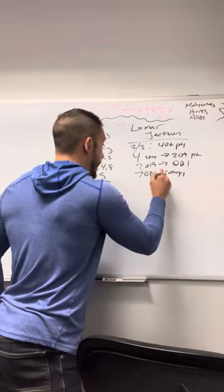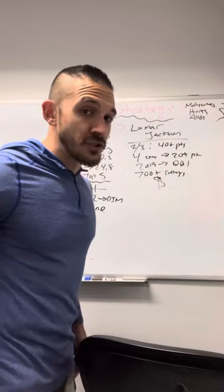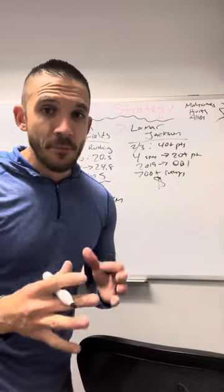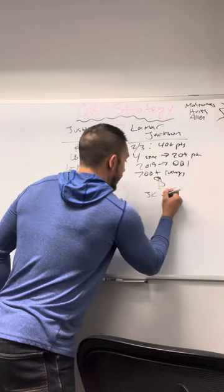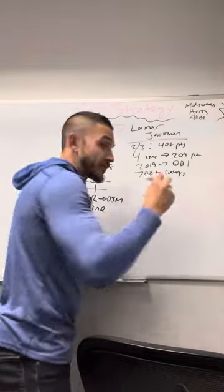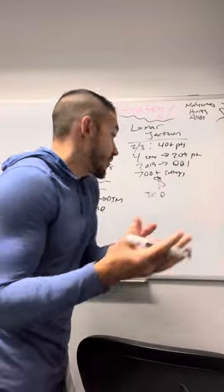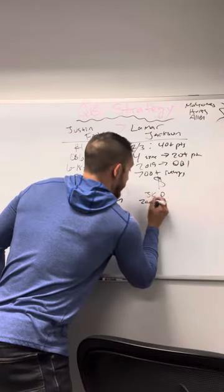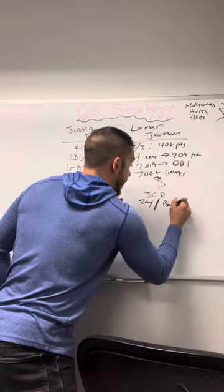This offseason, he got paid to be back in Baltimore. He has the best weapons of his career. J.K. Dobbins is now healthy and further removed from that injury. You have two former first-round wide receivers now. We have Zay Flowers from this year's draft, and then we have Rashad Bateman.